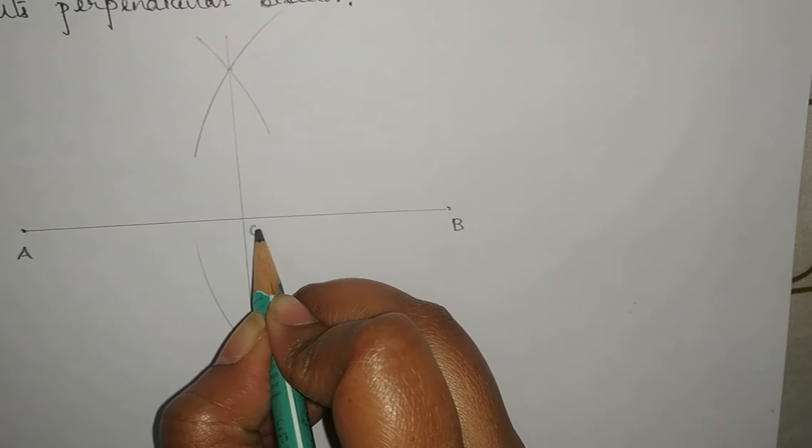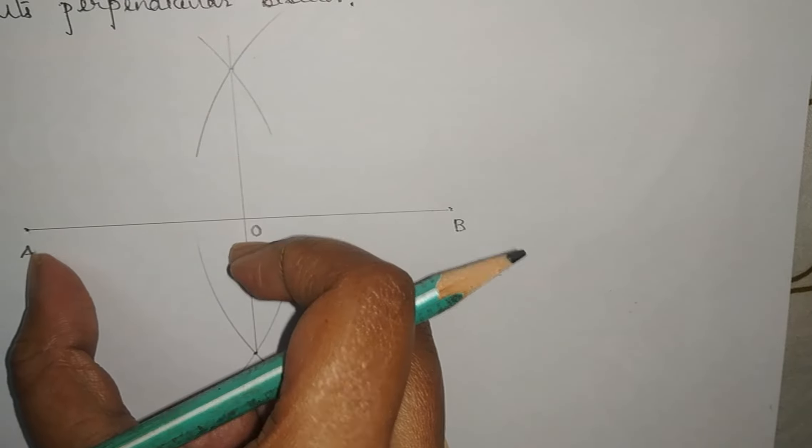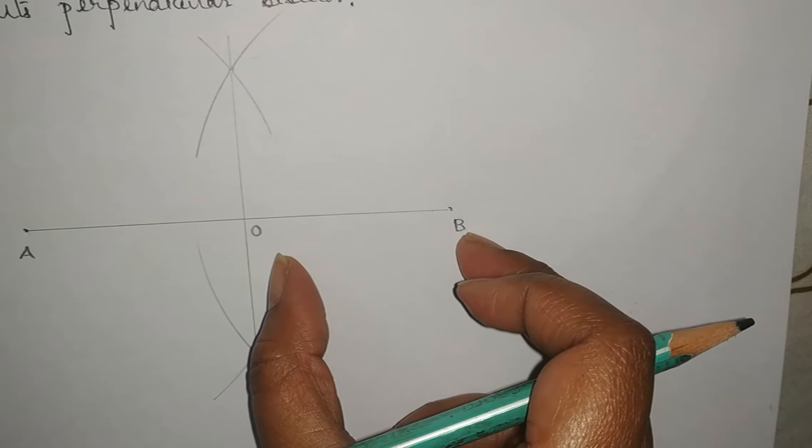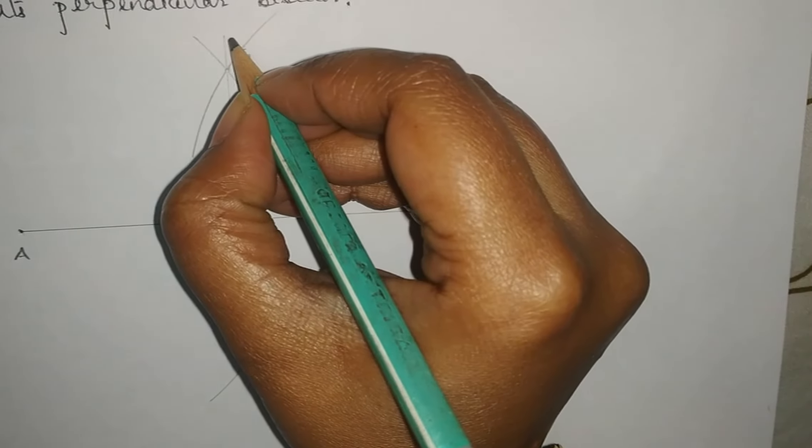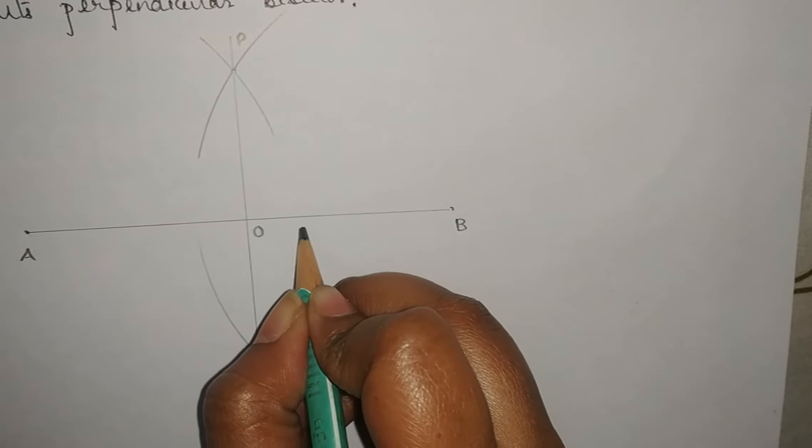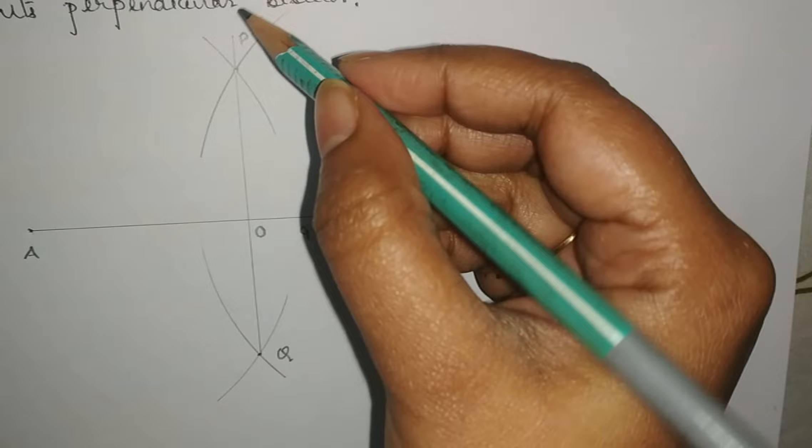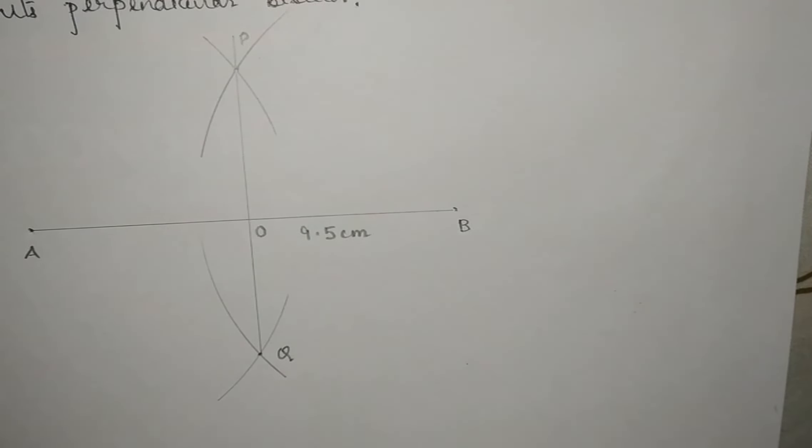Let's name it as O, so the length of OA will be equal to length of OB. Let's say P and Q. So this is the line segment of 9.5 centimeter and PQ is the perpendicular bisector. This is question number two. Thank you, students.